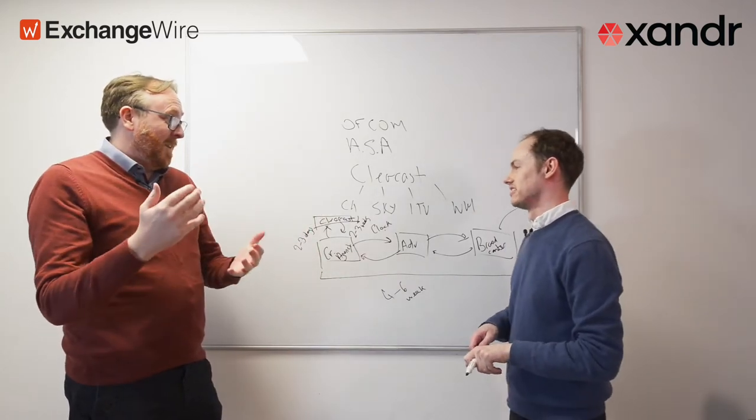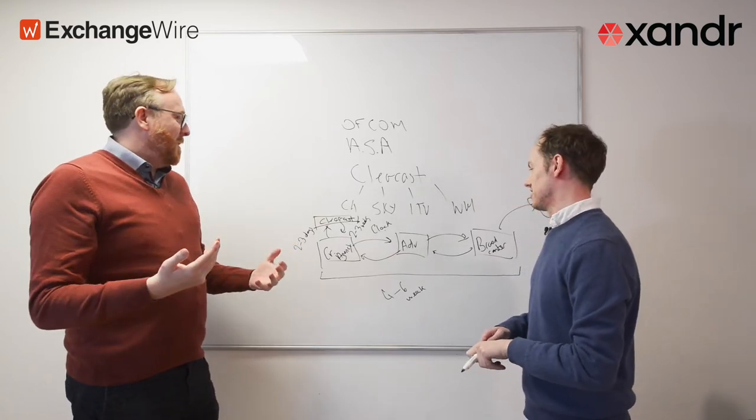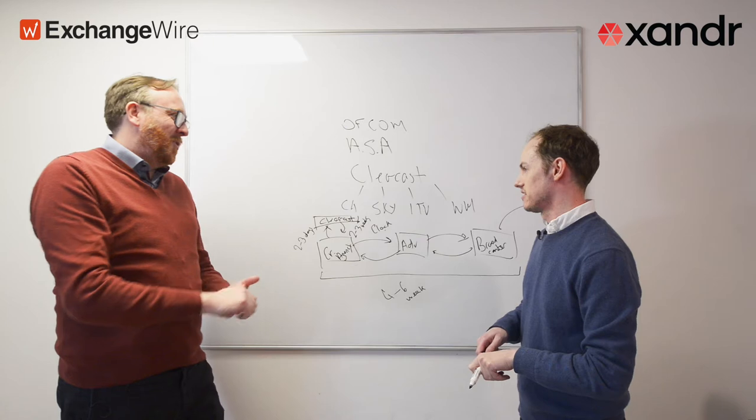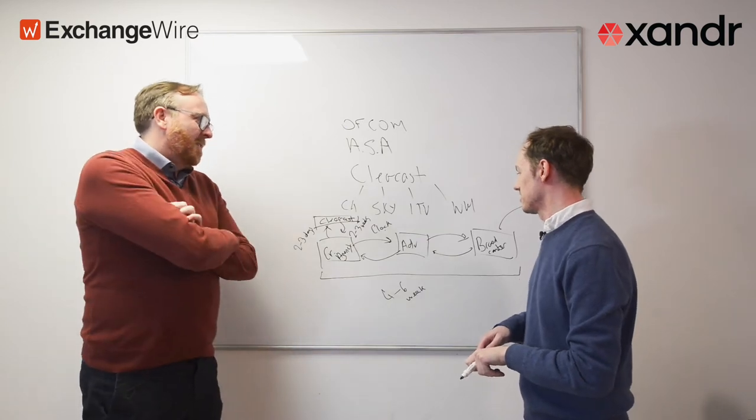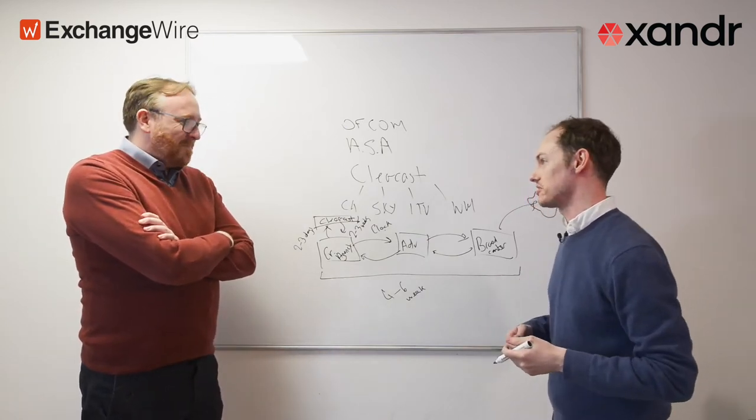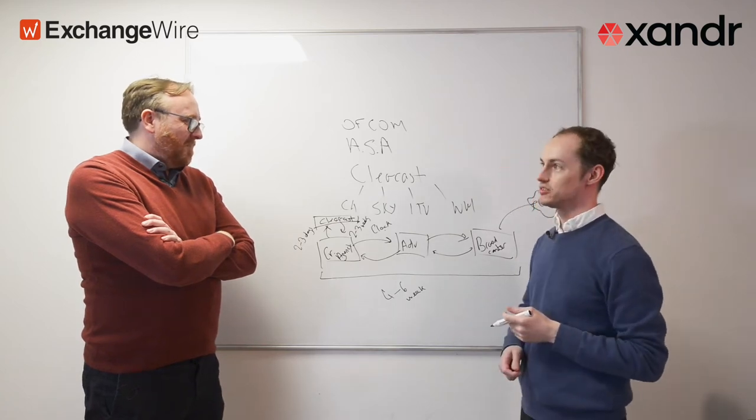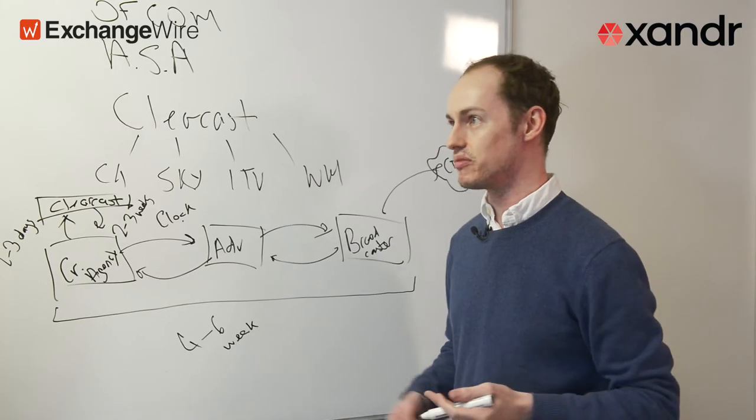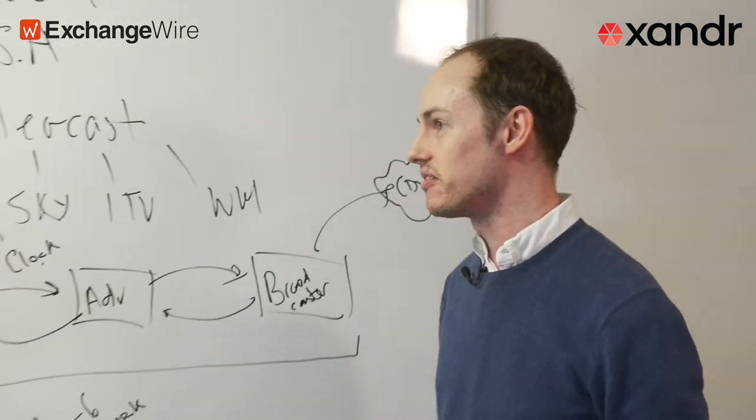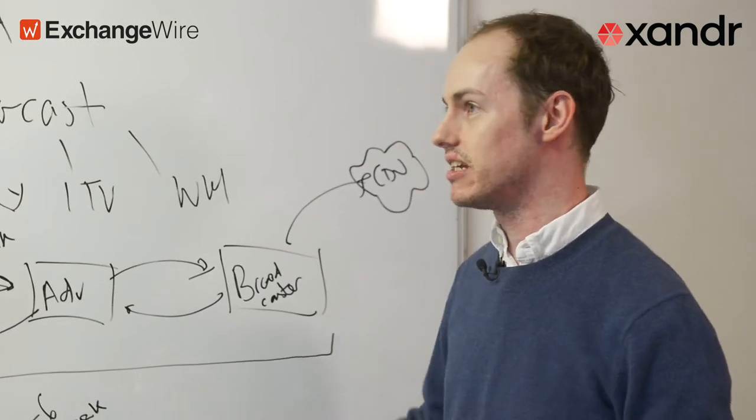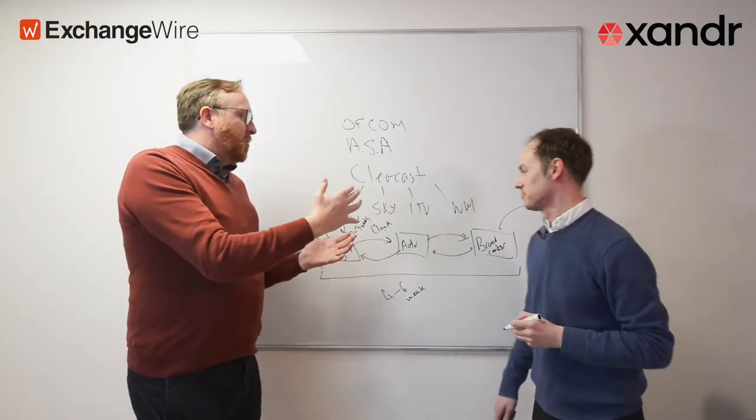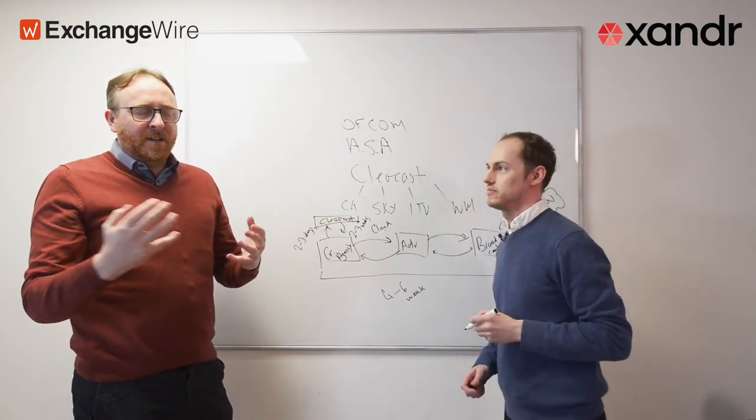Let's ask the obvious question: for a process of programmatic advertising which works in milliseconds, how do we get our heads around this gap between creative control and actual execution of four to six weeks? It's very different to the display environment where you can upload a creative into your DSP and be up and running in half an hour. There's just nowhere near this level of due diligence.